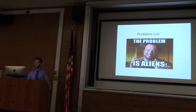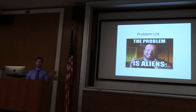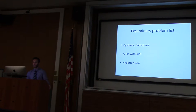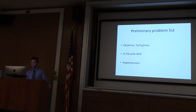Any junior want to give me a problem list? Shortness of breath. The rhythm strip showed irregular tachycardia. The patient is also hypertensive. So initial problem list: patient dyspneic, tachypneic, AFib with RVR — we can call it narrow complex at this point — and the patient is hypertensive. We got a real EKG.